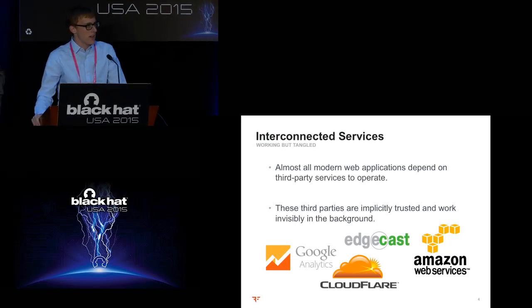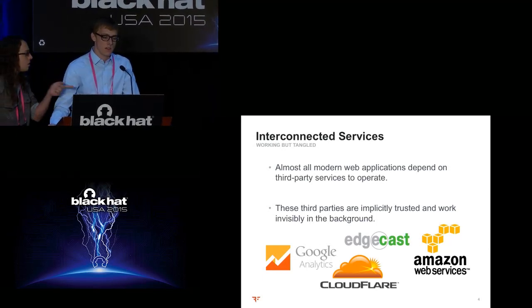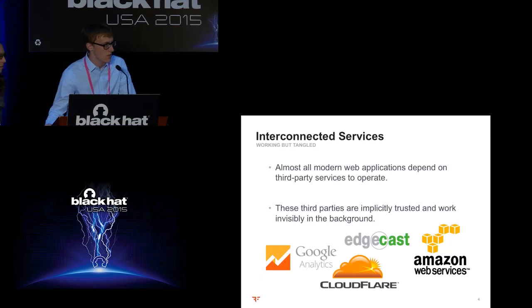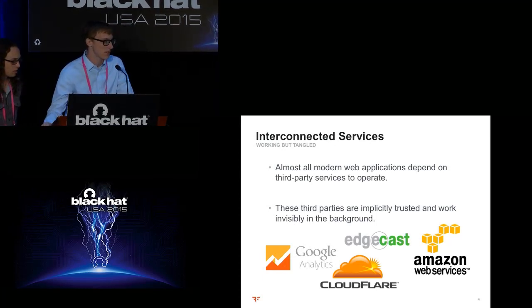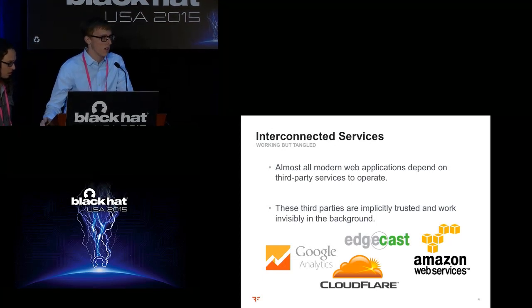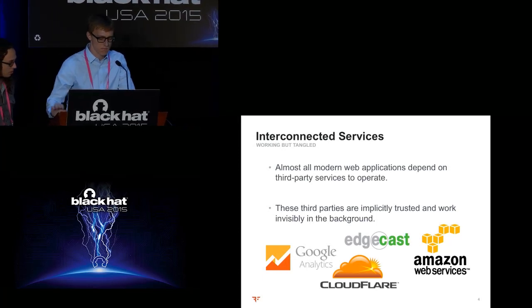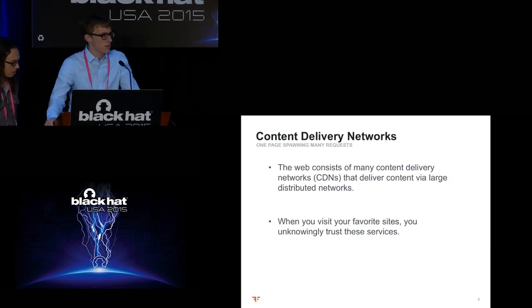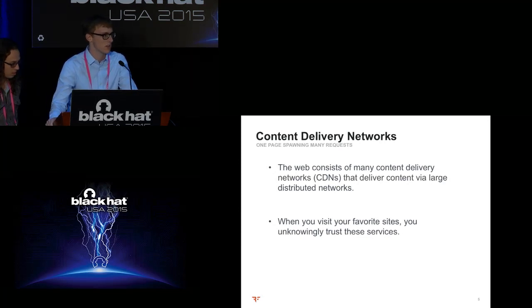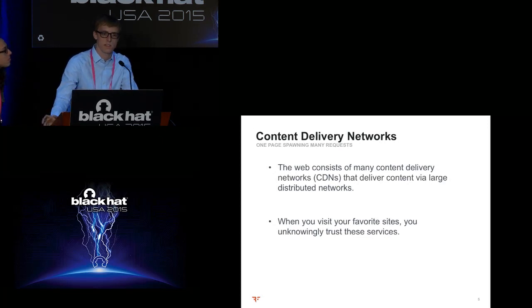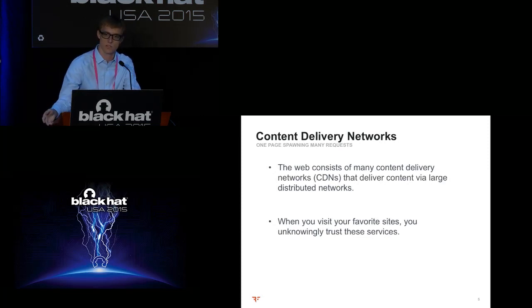In the modern web today, you rarely have a company that hosts all of their own content on their web pages. They make use of a lot of third-party services to deliver their product, and all these things work invisibly in the background when you visit these pages. More specifically, we're talking about content delivery networks — networks that serve content for other pages. You get to take advantage of their very fast distributed web services, and you implicitly extend your trust to them.